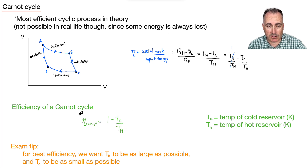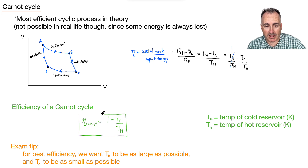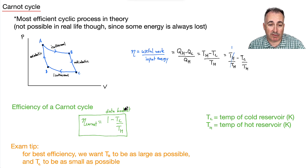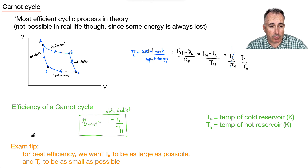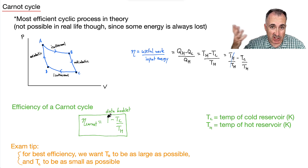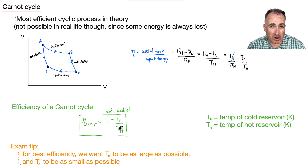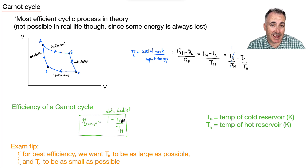So the Carnot efficiency equals one minus TC over TH. It's nice to see where it comes from, because this is on your data booklet. Remember that TC is the temperature of the cold reservoir and TH is the temperature of the hot reservoir — both in Kelvin. For best efficiency, you want TC over TH to be as small as possible, meaning you want TH to be as large as possible and TC as small as possible. Those conditions give you the best efficiency you could get.